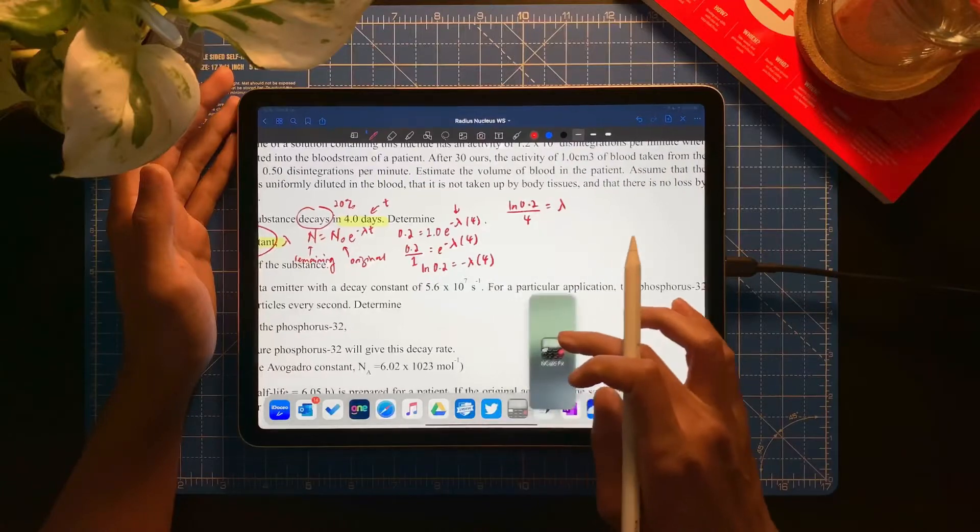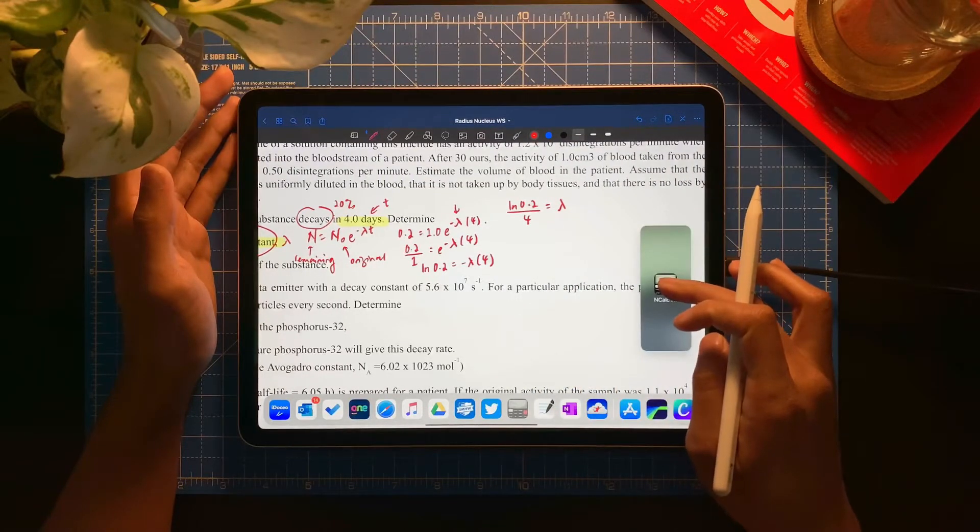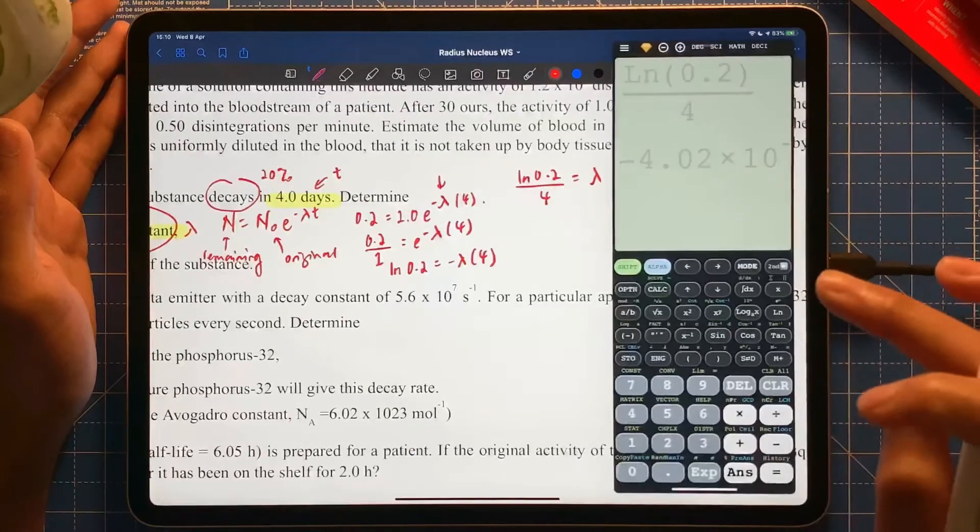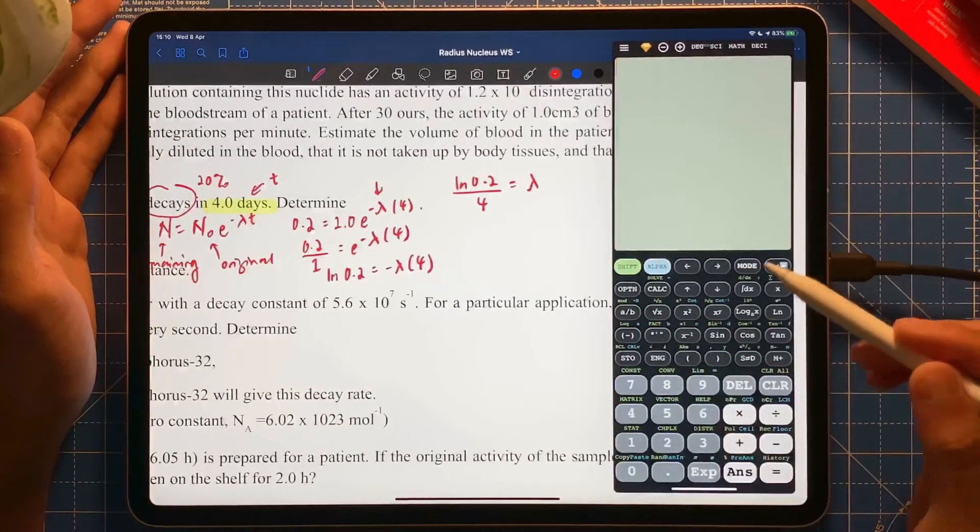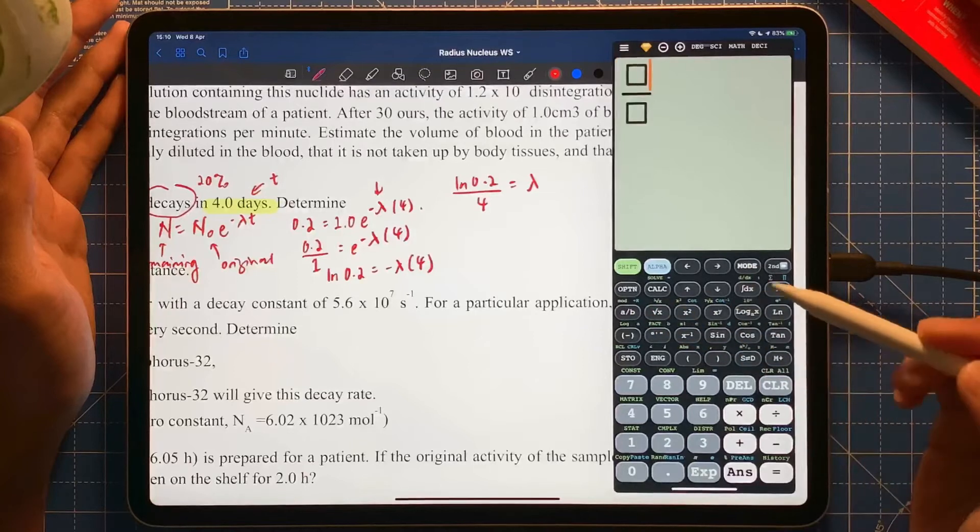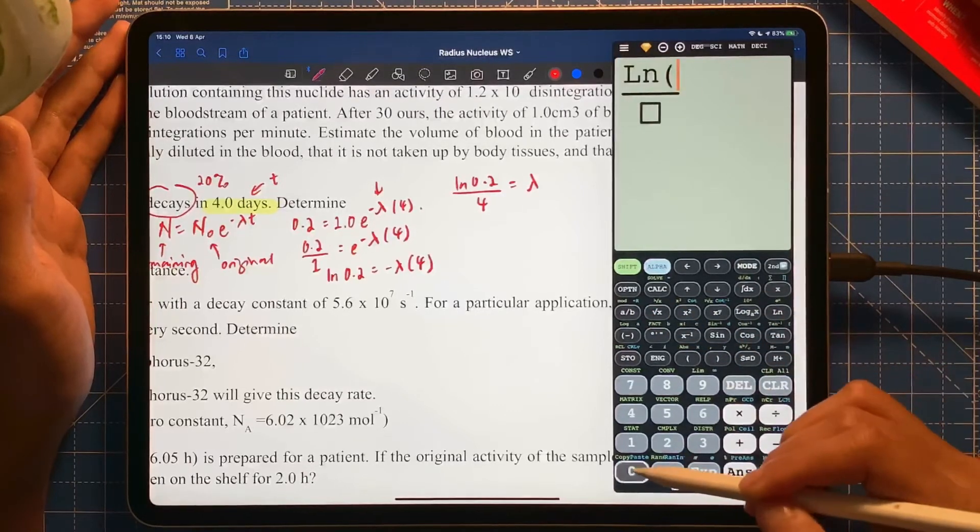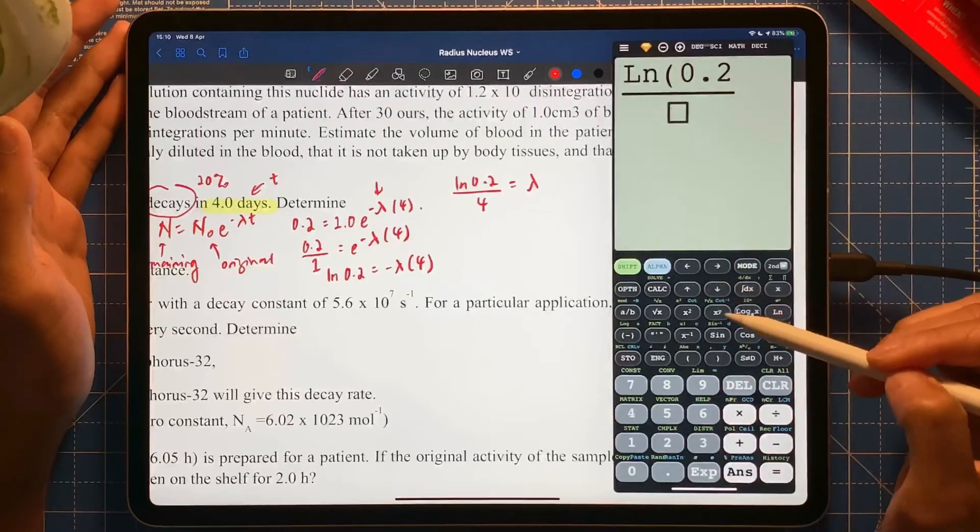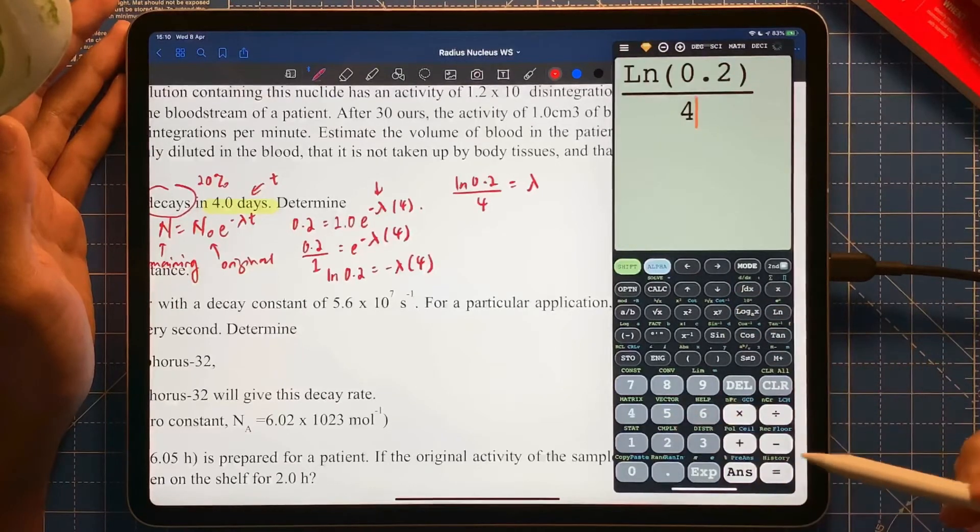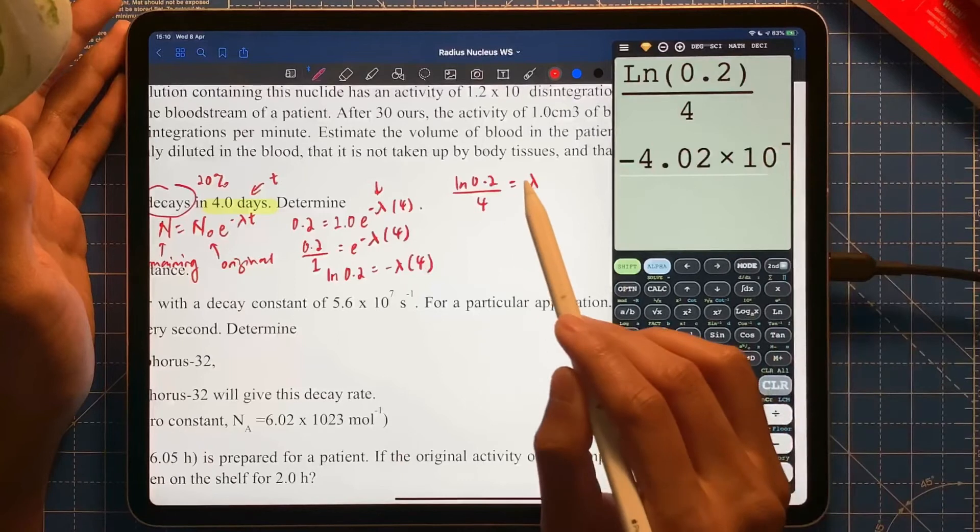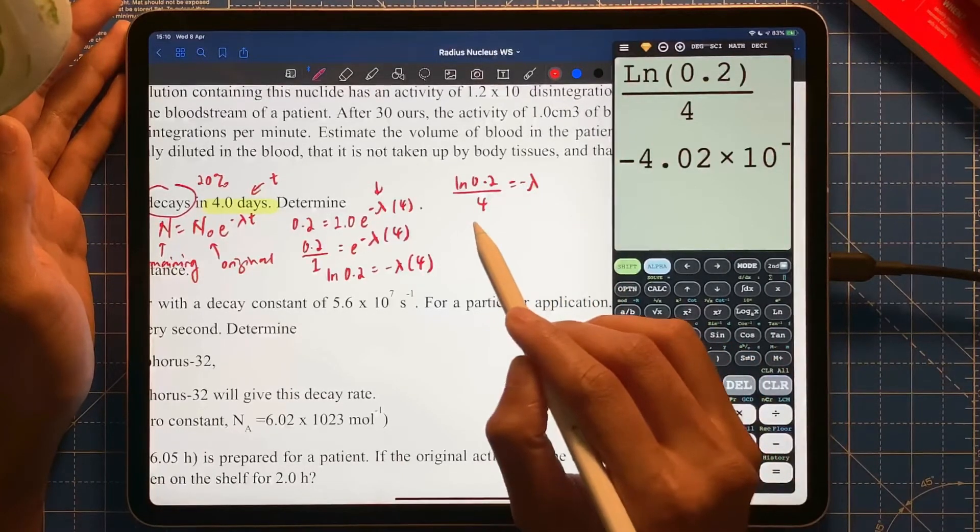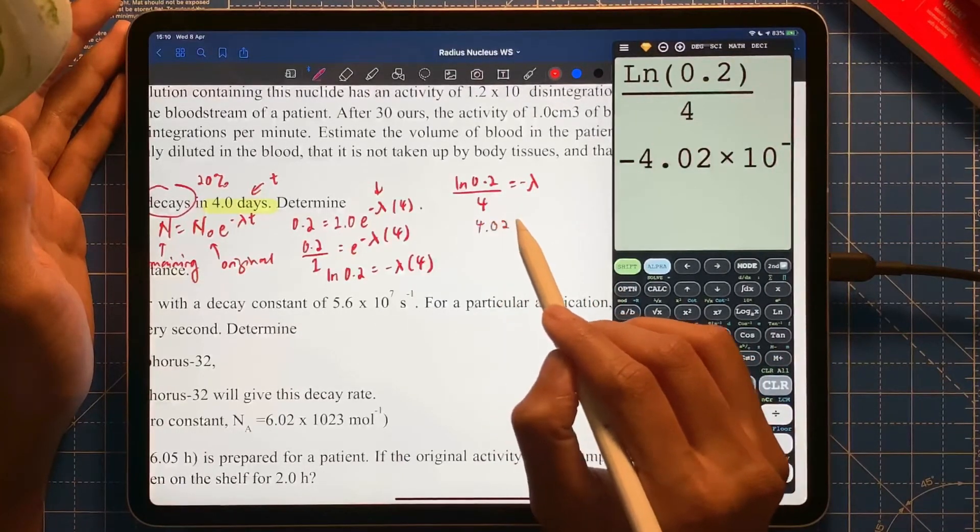I always have my calculator right at the bottom, and then if I nicely drag and drop here on the side, boom, I have it straight away here. So let's do some fractions. There we go, I've got here, it's minus here, forgot about that. So I've got 4.02 times 10 to the minus one.